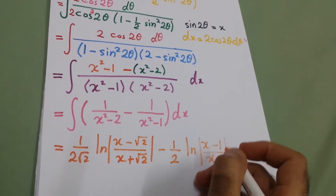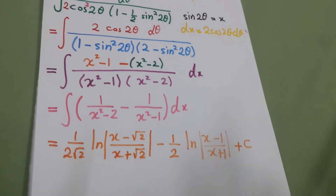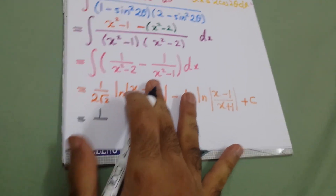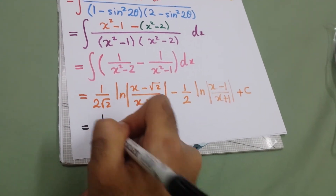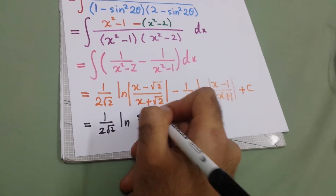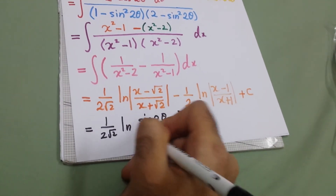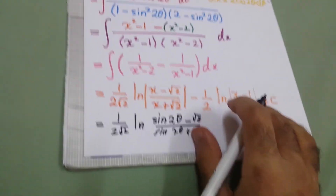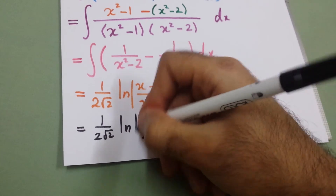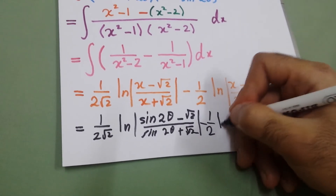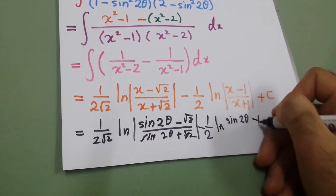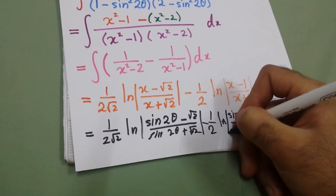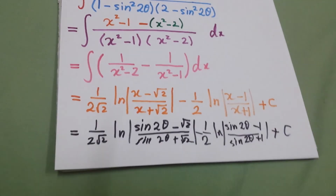Since x equals sin 2θ, the final answer is 1 over 2√2 times ln of |sine 2θ minus √2 over sine 2θ plus √2|, minus 1 over 2 times ln of |sine 2θ minus 1 over sine 2θ plus 1|, plus constant. Thank you for your attention and see you later.